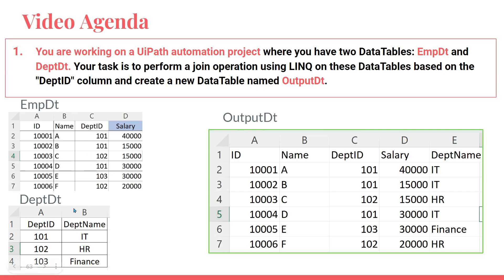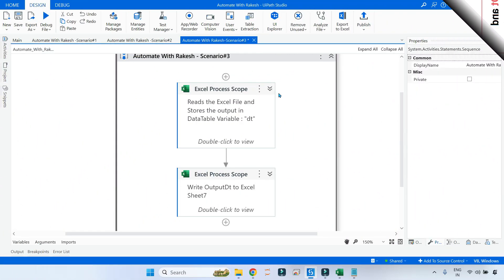The department ID column is your key — the primary key — based on which you will be joining both data tables. The output_dt should contain ID, name, department ID, and salary from the employee_dt, and only the department name column from the department_dt. This way everyone can understand which department each employee is from. Let's see how to achieve this in UiPath Studio.